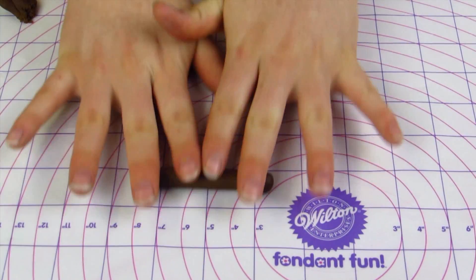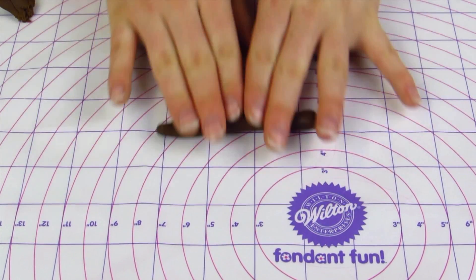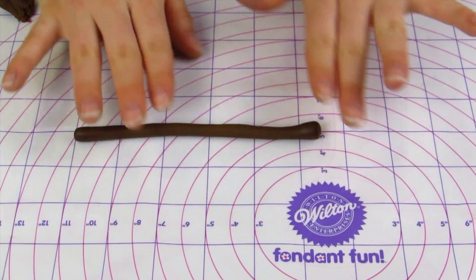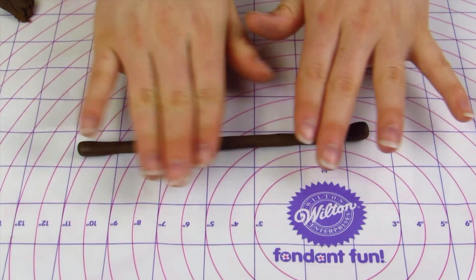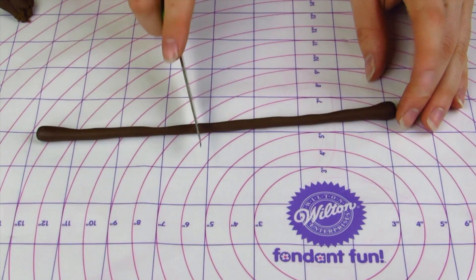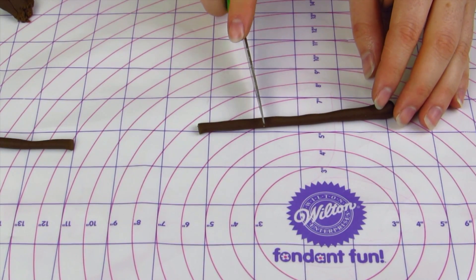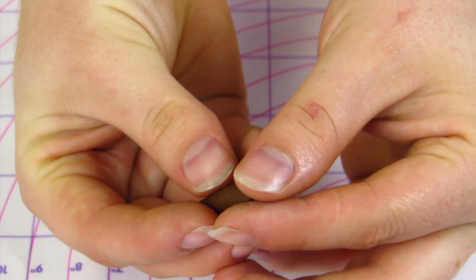Now for the handle of the hammer I'm using some chocolate fondant. You can also use brown fondant and I'm just going to roll out this worm shape and cut out a piece about an inch long.